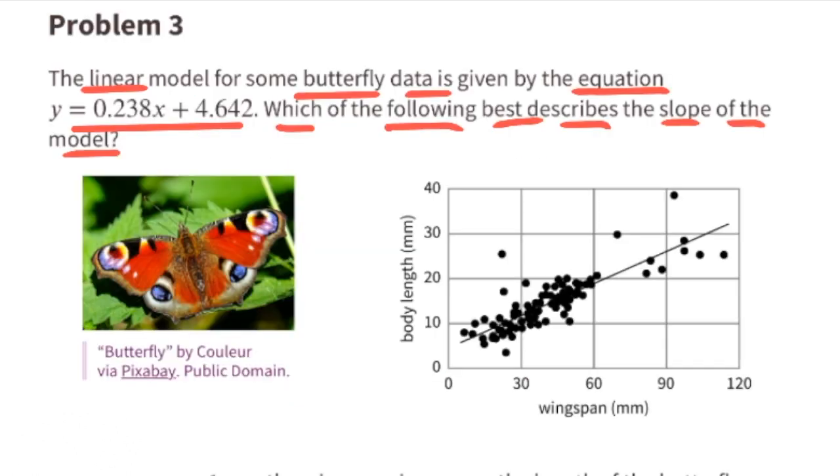Problem number three. The linear model for some butterfly data is given by this equation. Which of the following best describes the slope of the model?